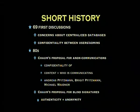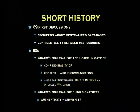In the 70s, the focus was much more on access control — how do you manage access control in systems? In the 80s, you start seeing really interesting developments: Chaum's proposal for anonymous communications, keeping the confidentiality of both communication content and who's communicating with whom. Andreas Pfitzmann, Birgit Pfitzmann, Michael Waidner and a few others were in that small community back then. In the mid-80s, Chaum makes proposals for blind signatures, developing cryptographic tricks achieving what are usually seen as contradictory properties — anonymity and authenticity.